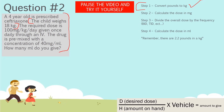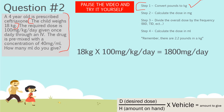Step two: calculate the dose in milligrams. The child weighs 18 kilograms, and the dose is written as 100 milligrams per kilogram per day. We multiply 18 by 100 — the kilograms cross out — giving us 1,800 milligrams per day.